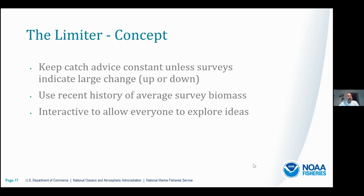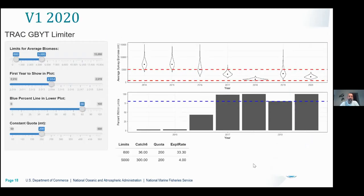In terms of the limiter: in 2020, after yet another discussion about the empirical rate and whether surveys were really tracking the population, the idea was raised of picking a constant catch advice and holding it unless there was a significant change — either up or down — in the surveys. Some ideas were thrown around about using the recent history of average survey biomass, and during the meeting one night I developed a Shiny app that would allow everyone to look at this on their own and bring ideas back to the table. This was version one of the TRACK George's Bank Yellowtail Limiter.